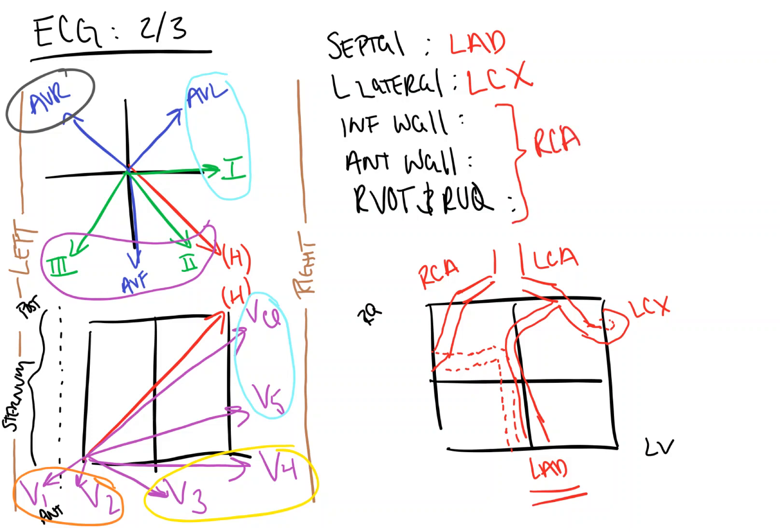So for completeness, if anyone wants to write it down, we'll just put V1, V2, lead AVL, 1, V5, V6, and then everything else is the RCA. So our inferior wall is 2, 3, AVF. Anterior wall is V3 and V4. And our RVOT and right upper quadrant is AVR. And this is the major blood supply of the heart.